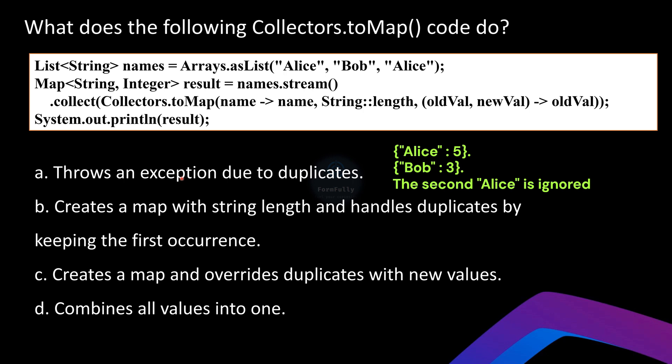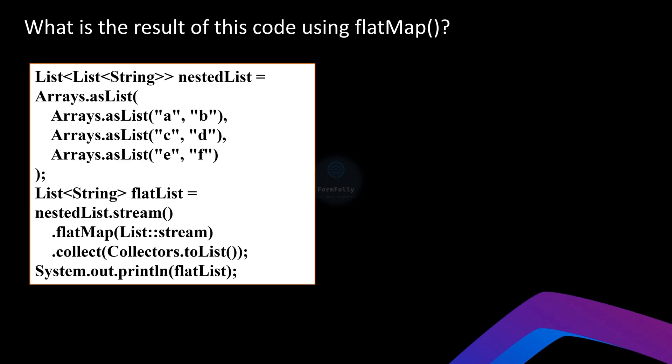After applying `Collectors.toMap` we get a map where names are keys and their lengths are values. The first Alice creates an entry with 5, Bob creates an entry with 3, and the second Alice is ignored due to the merge function. The resulting map prints Alice=5 and Bob=3. Choice B — 'creates a map with string lengths and handles duplicates by keeping the first occurrence' — is the correct answer. Option B is correct.